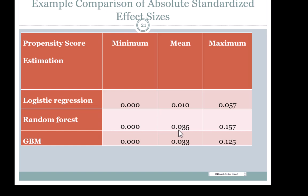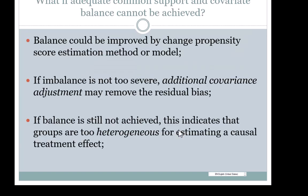If covariate balance is not adequate, you would have to try a different way to estimate propensity scores. If you cannot obtain adequate covariate balance by the adopted criteria, maybe the study is not a good application for propensity score analysis because the differences between treatment and control are just too large. If you don't achieve adequate covariate balance, you may try a different propensity score method, or in the worst case scenario you would abandon the propensity score analysis.